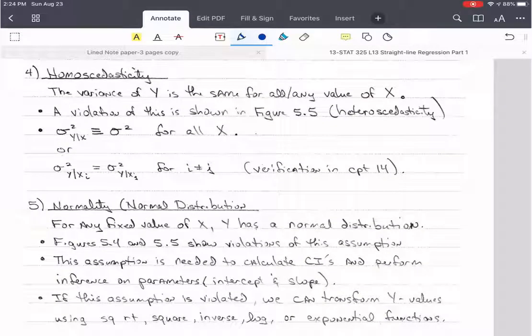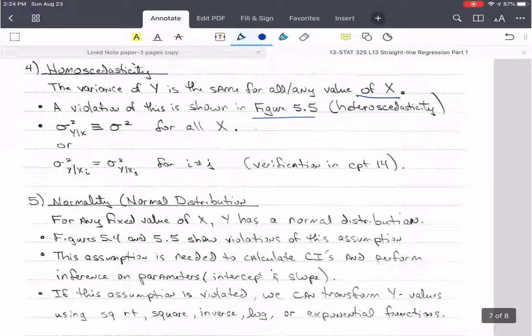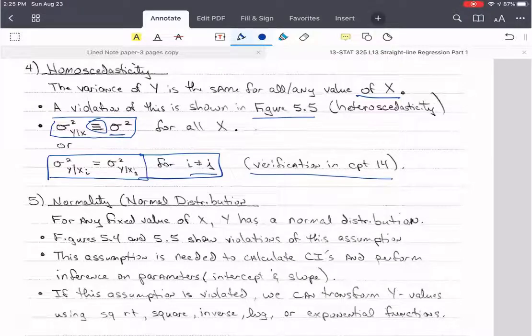Alright, let's move on to assumption number 4, homoscedasticity. The variance of y is the same for each and every value of x. So there is a variance of y for an individual value of x. And again, figure 5.4 shows a violation of this. You'll notice that the variance here and the variance here are going to be very different. In fact, the fourth value here is way different. So that would violate this, that picture shows a violation of this assumption. One of the ways we can write this very quickly is to say that sigma squared of y given x is identical to or equivalent to sigma squared, where it doesn't have anything. So sigma squared not having any subscripts means that it's constant across all values of x. And this is a shorthand for saying this. Actually, I need to put this in there too. That sigma squared of y given xi is equal to sigma squared y given xj, where i and j are not the same. And we're going to verify this in chapter 14.